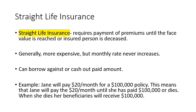Let's look at an example. Say we have Jane. Jane is going to pay $20 a month for a $100,000 policy. This means Jane will pay the $20 a month until she has paid the $100,000 — that's the face value, the amount her beneficiaries will be able to collect if she passes away.